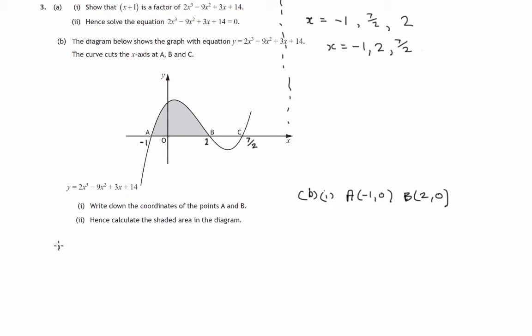So the shaded area will be given, since it lies above the x-axis, by integrating from negative 1 to 2. And then the formula for this curve, which is 2x cubed minus 9x squared plus 3x plus 14. So that will give us the shaded area. So let's proceed with this integration.